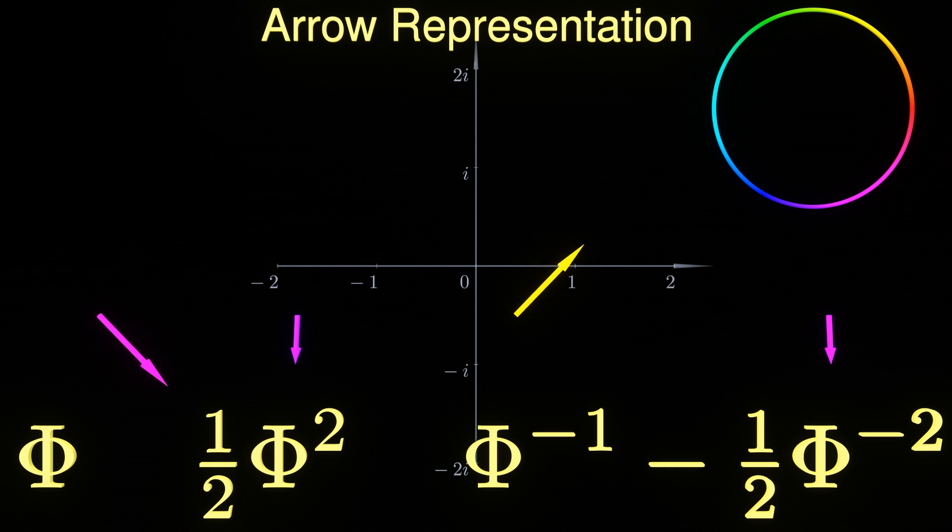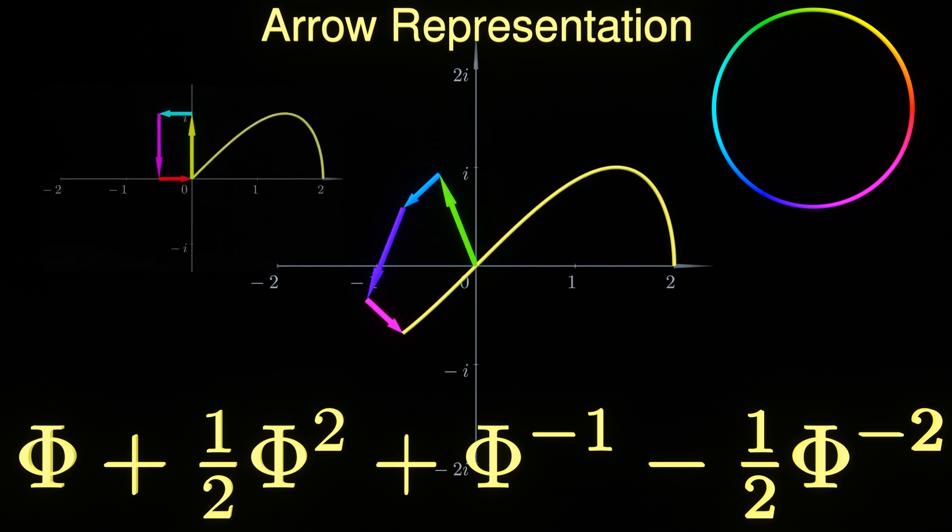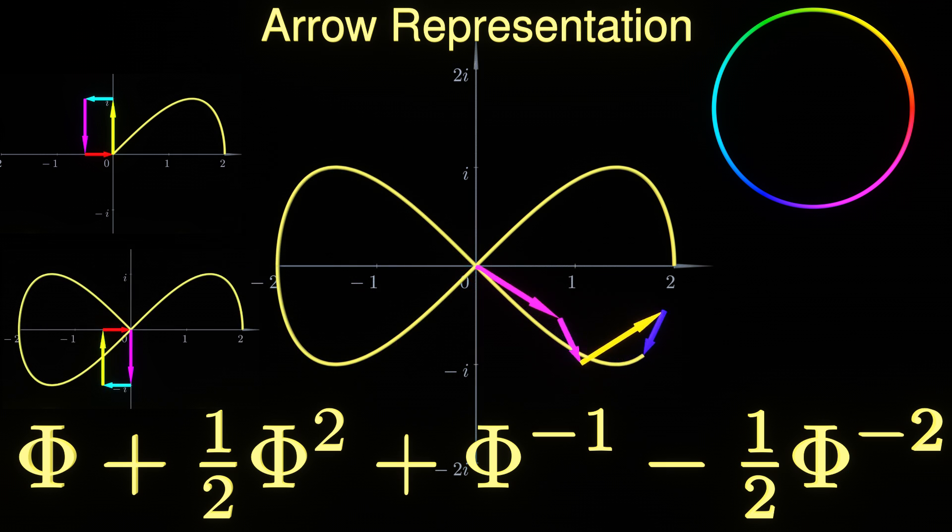When the monomials are added to build a polynomial, the corresponding arrows are just attached to each other tip to tail. The individual motion of each single arrow is turned into a joint effort. And a chain of arrows traces the shape of the curve that the circle is mapped into by the polynomial. Have a look at the few snapshots that nicely show the intricate interplay of the arrows to reach the origin.